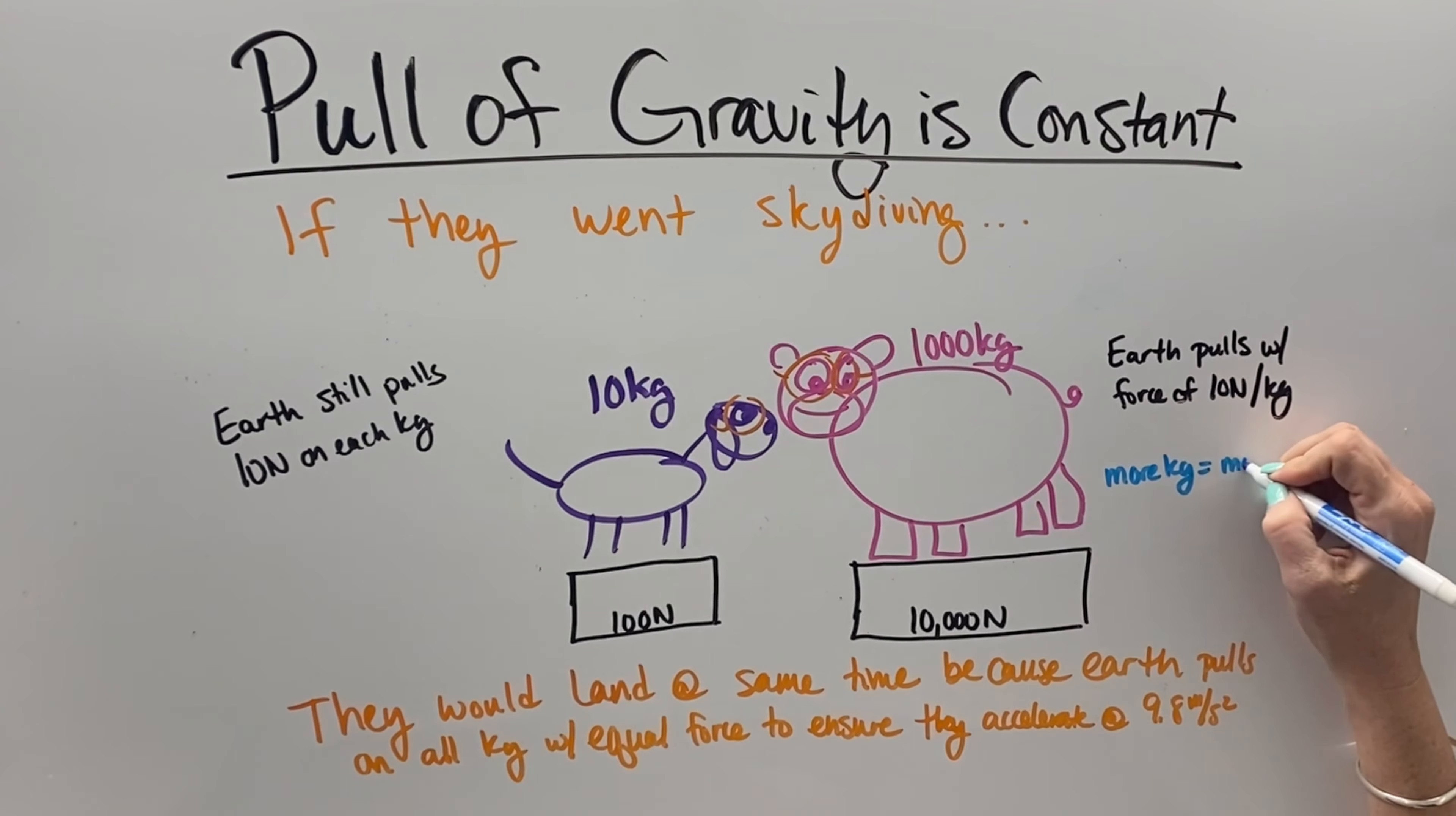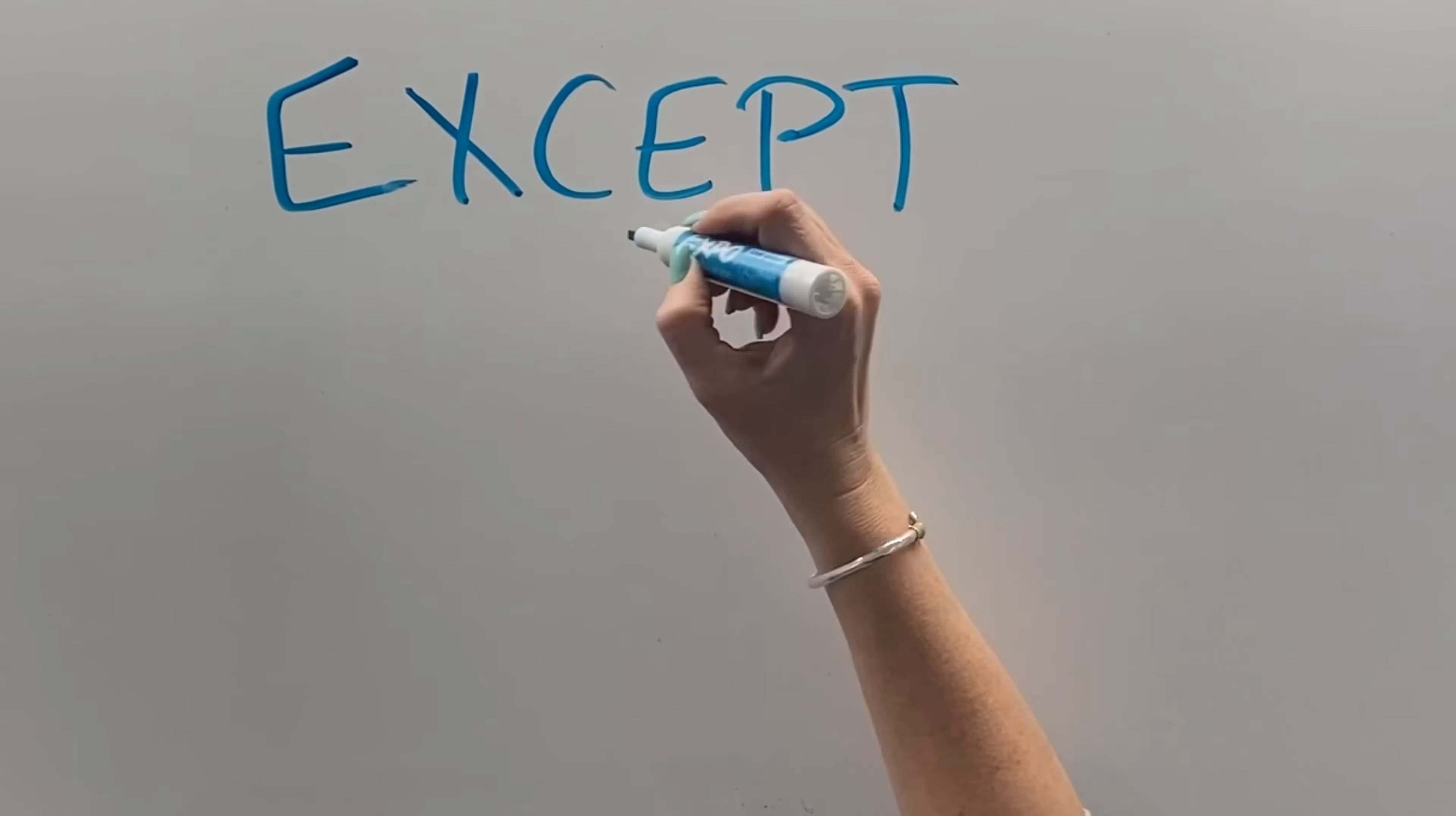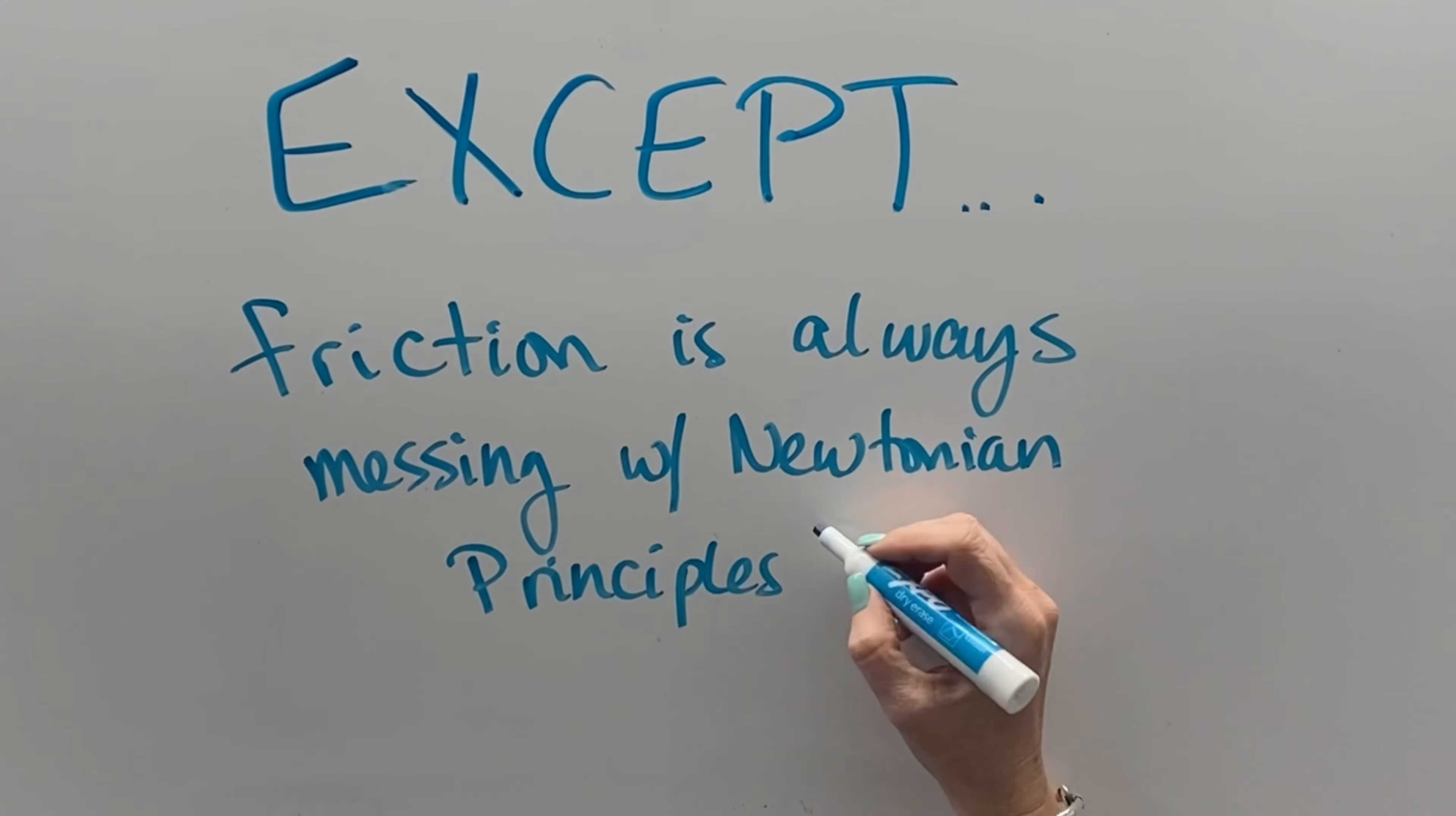The gravitational force is always going to be greater on objects with more kilograms because the Earth is always attracted to greater masses. All this beautiful stuff falling at the same rate works most of the time, except friction is always messing with stuff, so you can see what happens with air resistance in the next video.